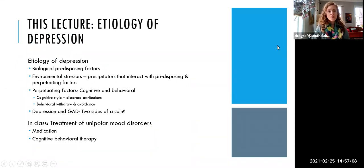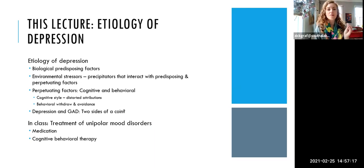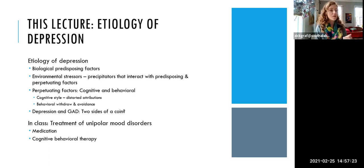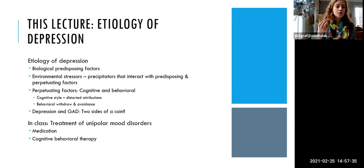In this lecture, I'm going to talk about the etiology of depression. We'll start with the biological predisposing factors and then integrate that with the environmental stressors we've already talked about — how these precipitating factors interact with biological predisposing factors and with the cognitive and behavioral perpetuating factors I'm going to talk about today. In the in-class part of this topic, we'll talk about the treatment of unipolar mood disorders with a focus on cognitive behavioral therapy.